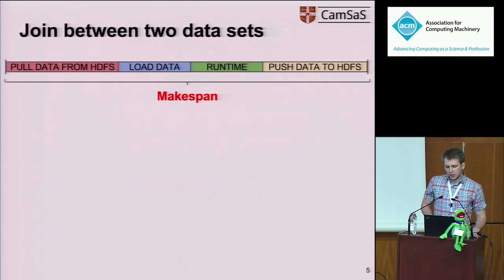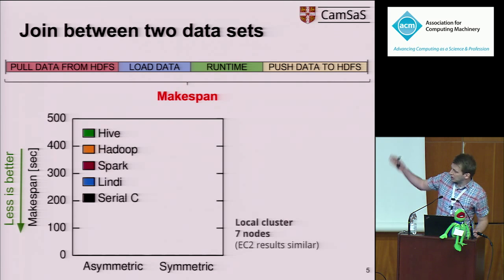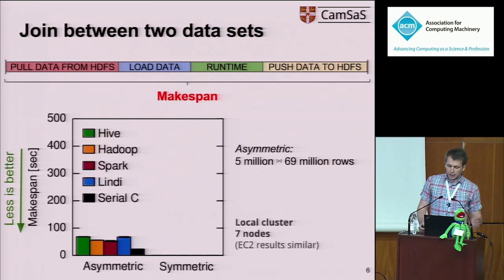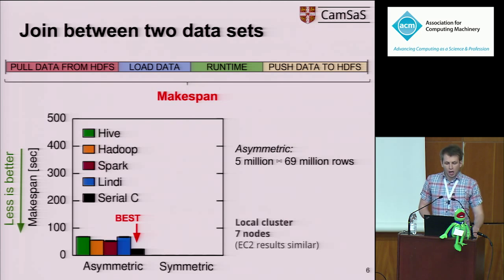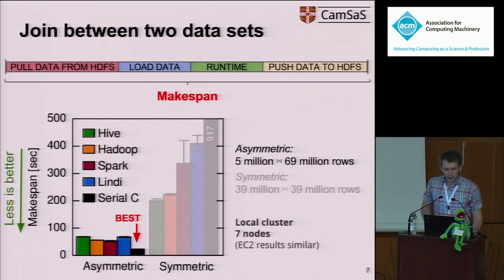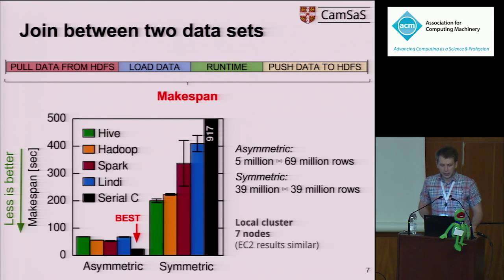In the first experiment, he executed a join on two datasets. On the y-axis we have makespan, and less is better. The two datasets are asymmetric and generate about 1.3 gigabytes of output. It turns out that a single-threaded C implementation has the lowest makespan. But with two symmetric datasets generating about 29 gigabytes of output, the single-threaded C implementation performs the worst. In this case, Hive and Hadoop are the best ones, due to the fact that they managed to exploit parallel I/O.